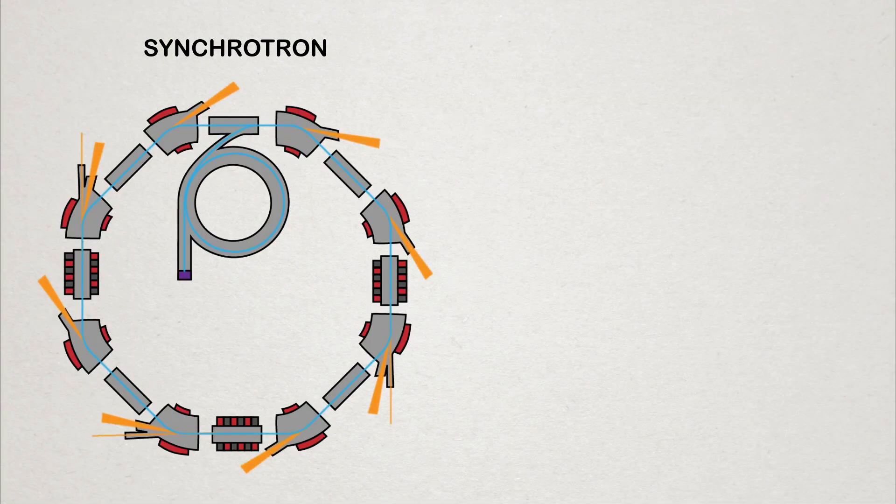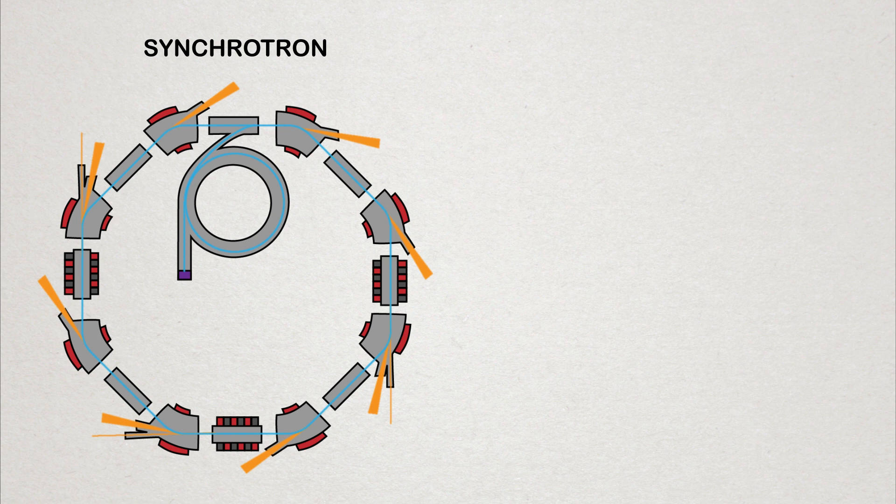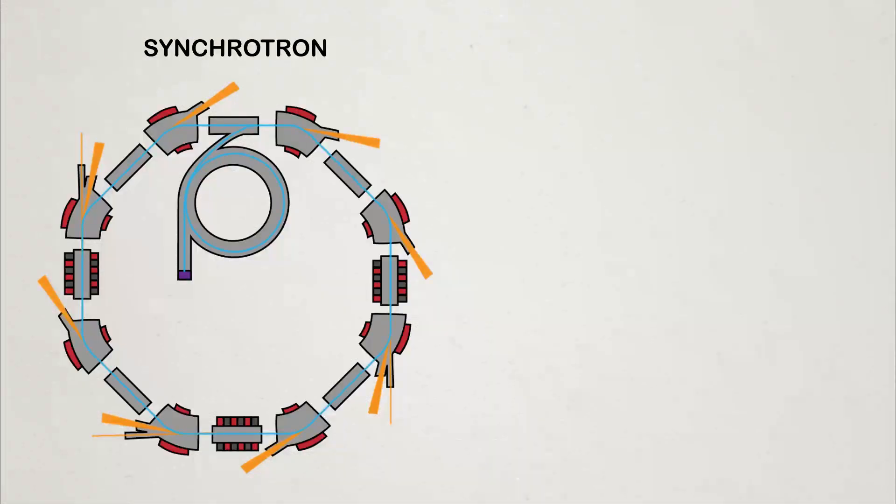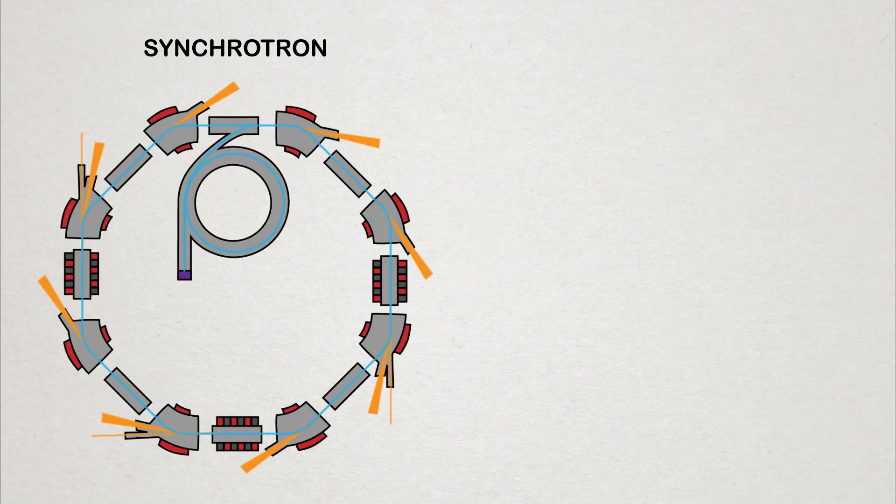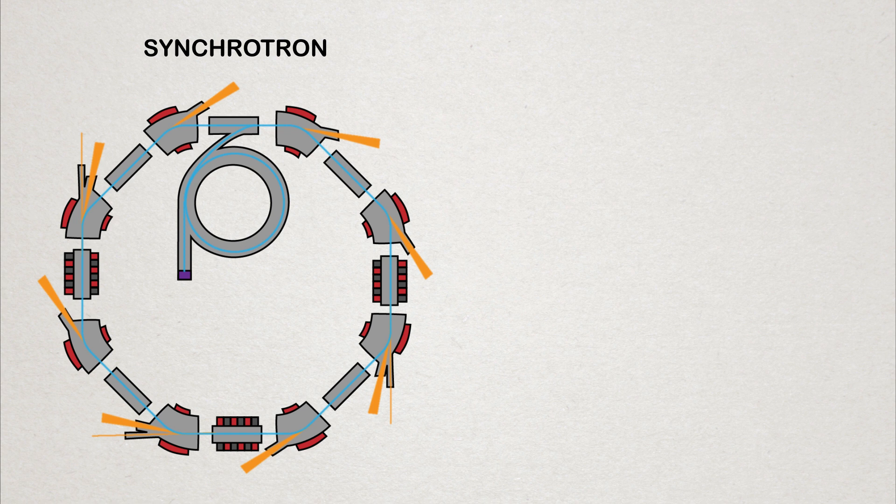Once in the storage ring, the electrons that are now moving near the speed of light go through a series of magnets that are designed for different tasks. The main two that we need to know about are bending magnets and undulating magnets.